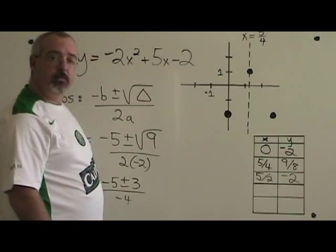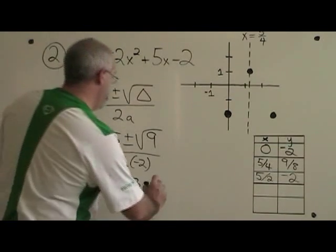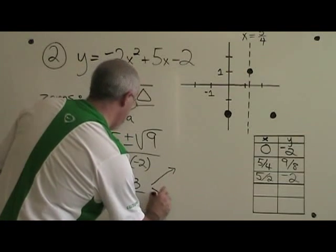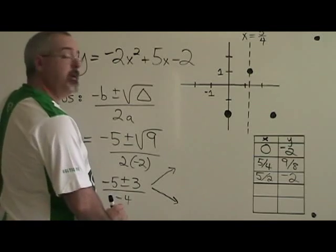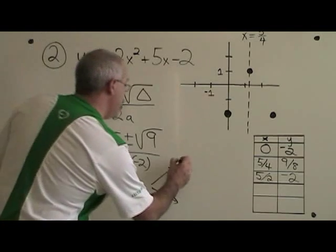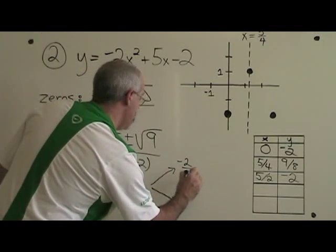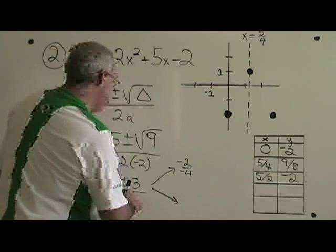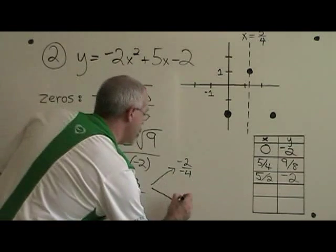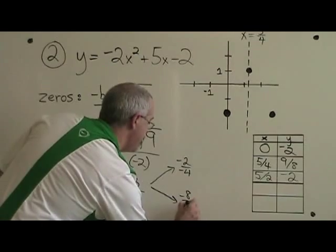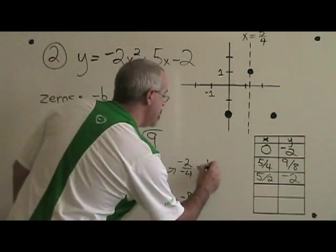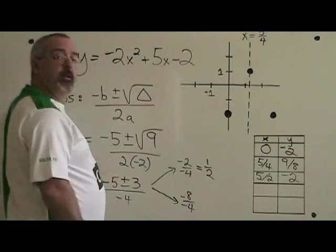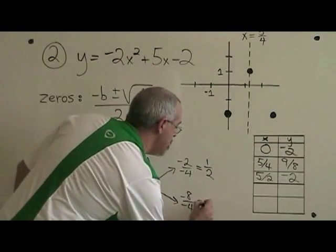It's time for us to split our quadratic formula. Negative 5 plus 3 is equal to negative 2. Negative 5 minus 3 is equal to negative 8. Negative 2 divided by negative 4 is positive one half. And negative 8 divided by negative 4 is positive 2.